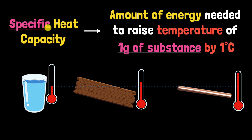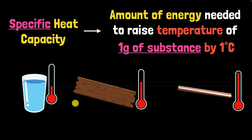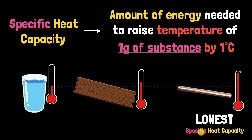Do you see the difference between this and heat capacity? Earlier, heat capacity was the amount of energy needed to raise the temperature by one degree Celsius — mass did not matter. But specific heat capacity specifically considers one gram of substance. Copper's temperature increased the fastest, so it must be very easy to increase the temperature of one gram of copper, meaning it takes the lowest amount of energy to raise its temperature by one degree Celsius. So among the three, copper should have the lowest specific heat capacity.